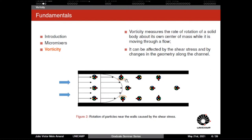With shear stress, we have a low velocity near the wall and a higher velocity in the center. This velocity gradient makes particles near the upper wall spin counterclockwise and particles near the lower wall spin clockwise. Meanwhile, at the centerline there is no shear stress effect, so there is no vorticity for particles in that layer.